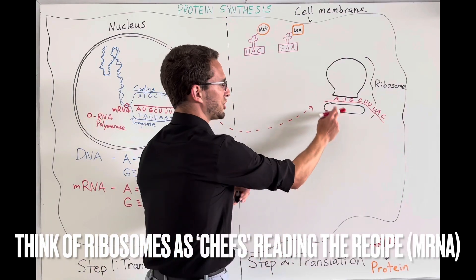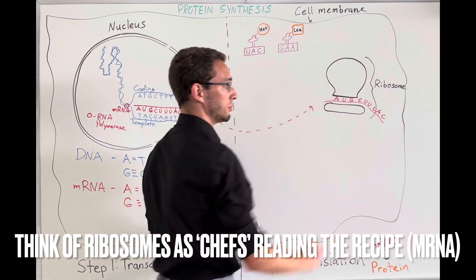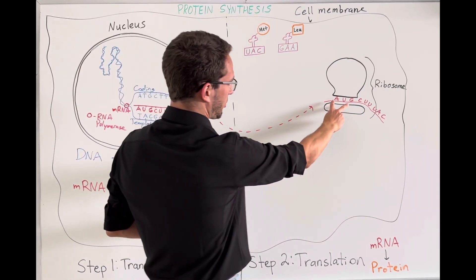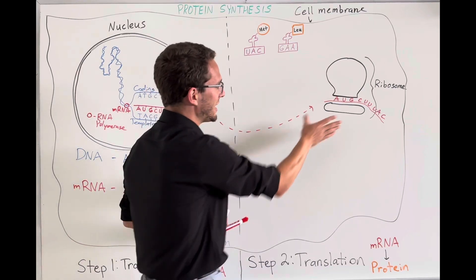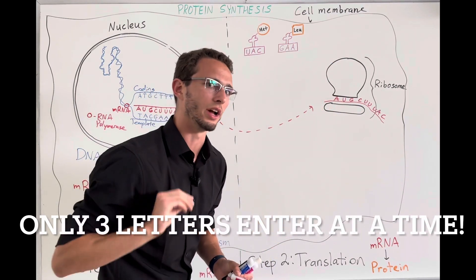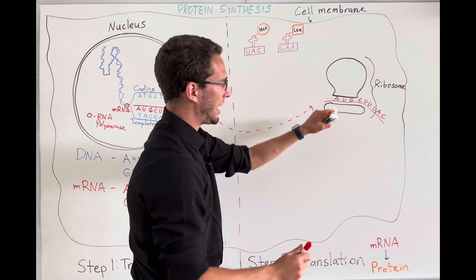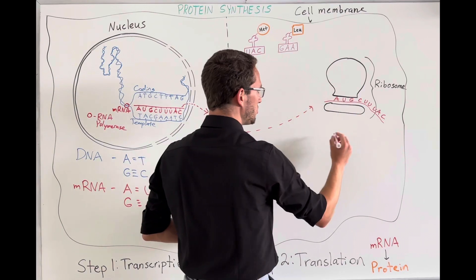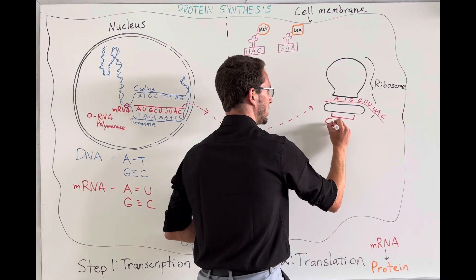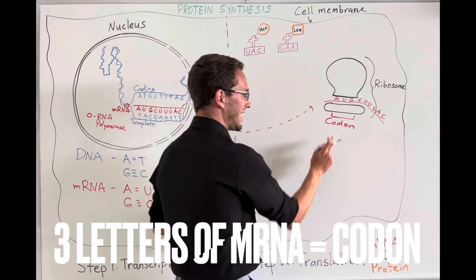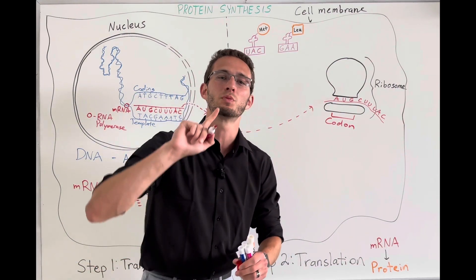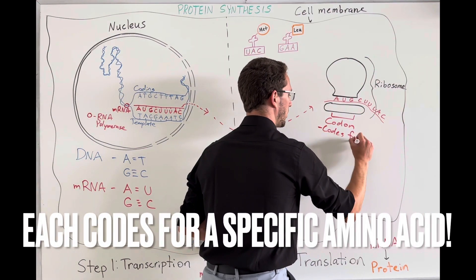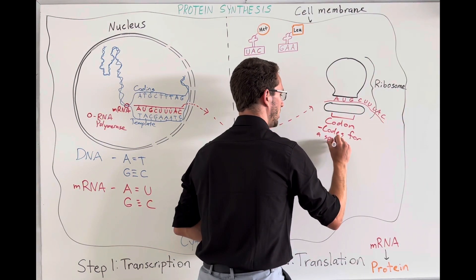So now I've got the mRNA transcript actually coming into the ribosome. Now, if you notice how I drew it, I fit about three letters of the mRNA inside the ribosome at any one time. This is really important because the ribosome reads these in threes. So this three, this AUG, any segment of three, is called a codon. And this codon is going to code for a specific amino acid.